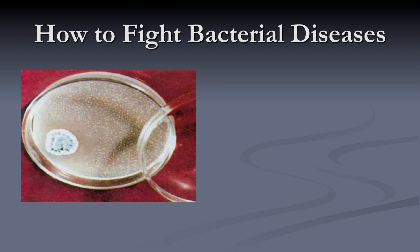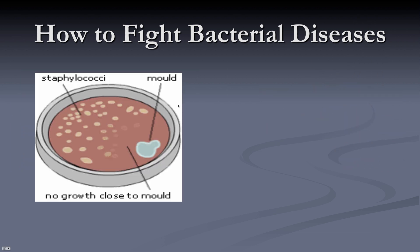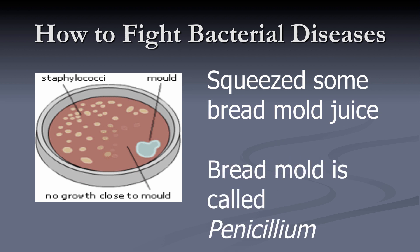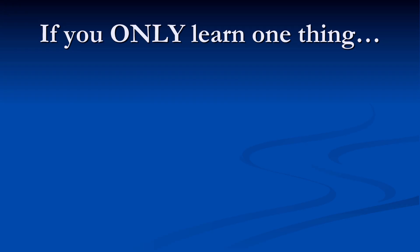Here's the story of how Fleming discovered antibiotics. He was working in his lab with petri dishes — named for Dr. Petri — and had colonies of bacteria growing. By accident, bread mold contaminated his dish, but he noticed that around the contamination no bacteria were growing. He thought something in the mold was keeping bacteria from growing, squeezed some mold out, and tested it. The bread mold is called penicillium — and that's where the name penicillin comes from.